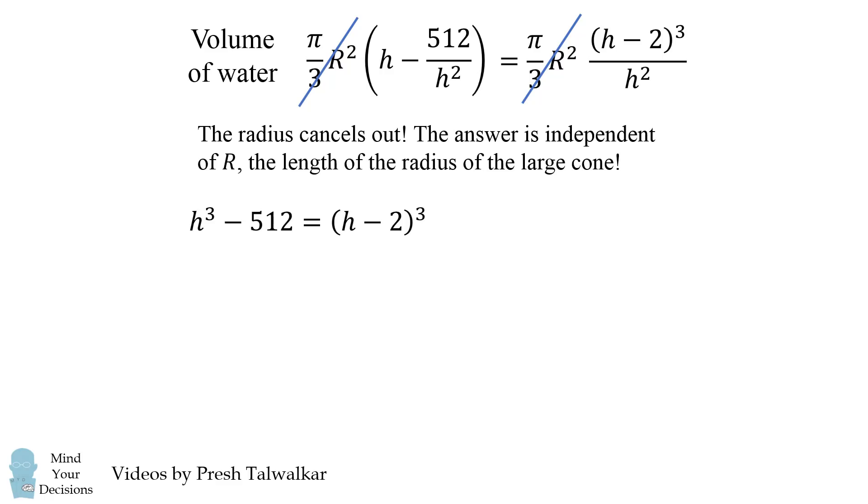After we multiply both sides by h squared, we get the equation h cubed minus 512 is equal to the quantity h minus 2 cubed. We'll expand out h minus 2 cubed to the following. We have h cubed minus 6h squared plus 12h minus 8. We then simplify both formulas by canceling h cubed and then we get a quadratic formula.